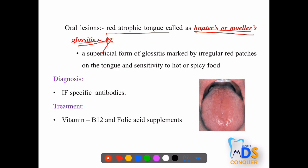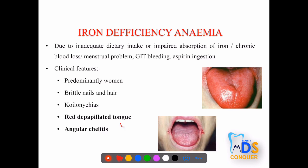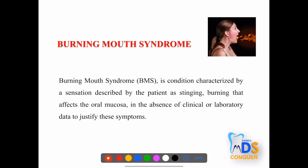Iron deficiency anemia also shows a red depapillated tongue, caused by inadequate dietary intake, impaired iron absorption, blood loss from menstrual problems, GIT bleeding, or chronic systemic aspirin ingestion. It predominantly affects women. Other features include sparse and brittle hair, brittle nails (koilonychia — spoon-shaped nails), red depapillated tongue, and angular cheilitis.